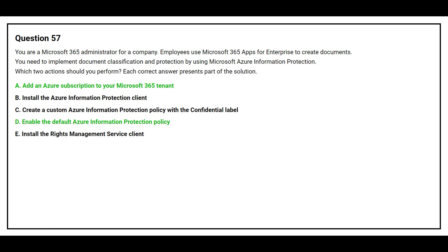The correct answers are Option A, add an Azure subscription to your Microsoft 365 tenant, and Option D, enable the default Azure Information Protection policy.